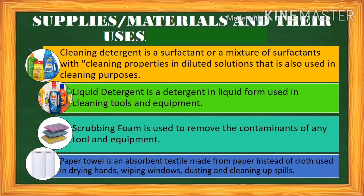Now let's move on to supplies or materials and their uses. First, we have cleaning detergent — it is a surfactant or a mixture of surfactants with cleaning properties in diluted solutions, used for cleaning purposes. Next is liquid detergent, a detergent in liquid form used in cleaning tools and equipment. Usually, we see cleaning detergent used in washing clothes, while liquid detergent is used in washing dishes.